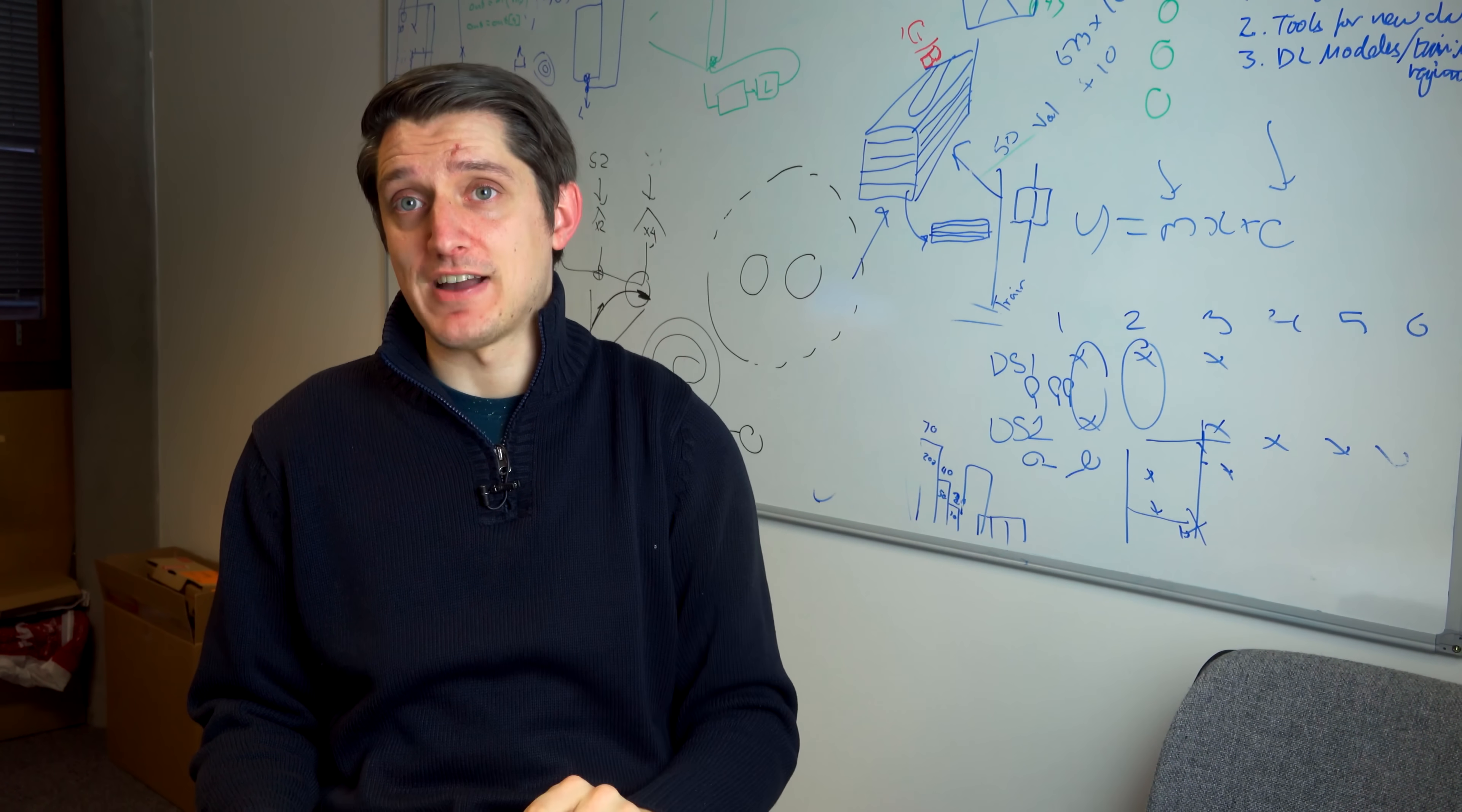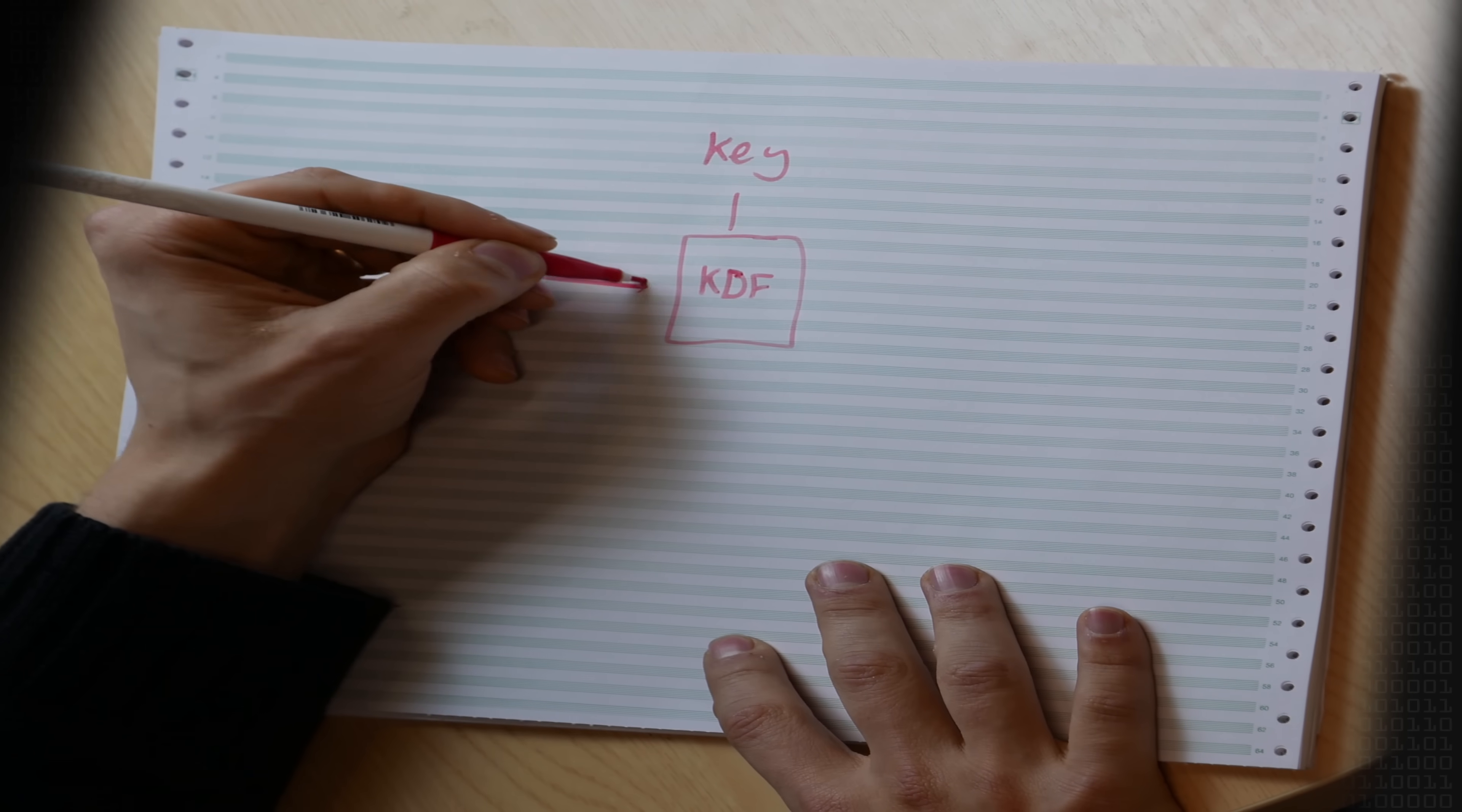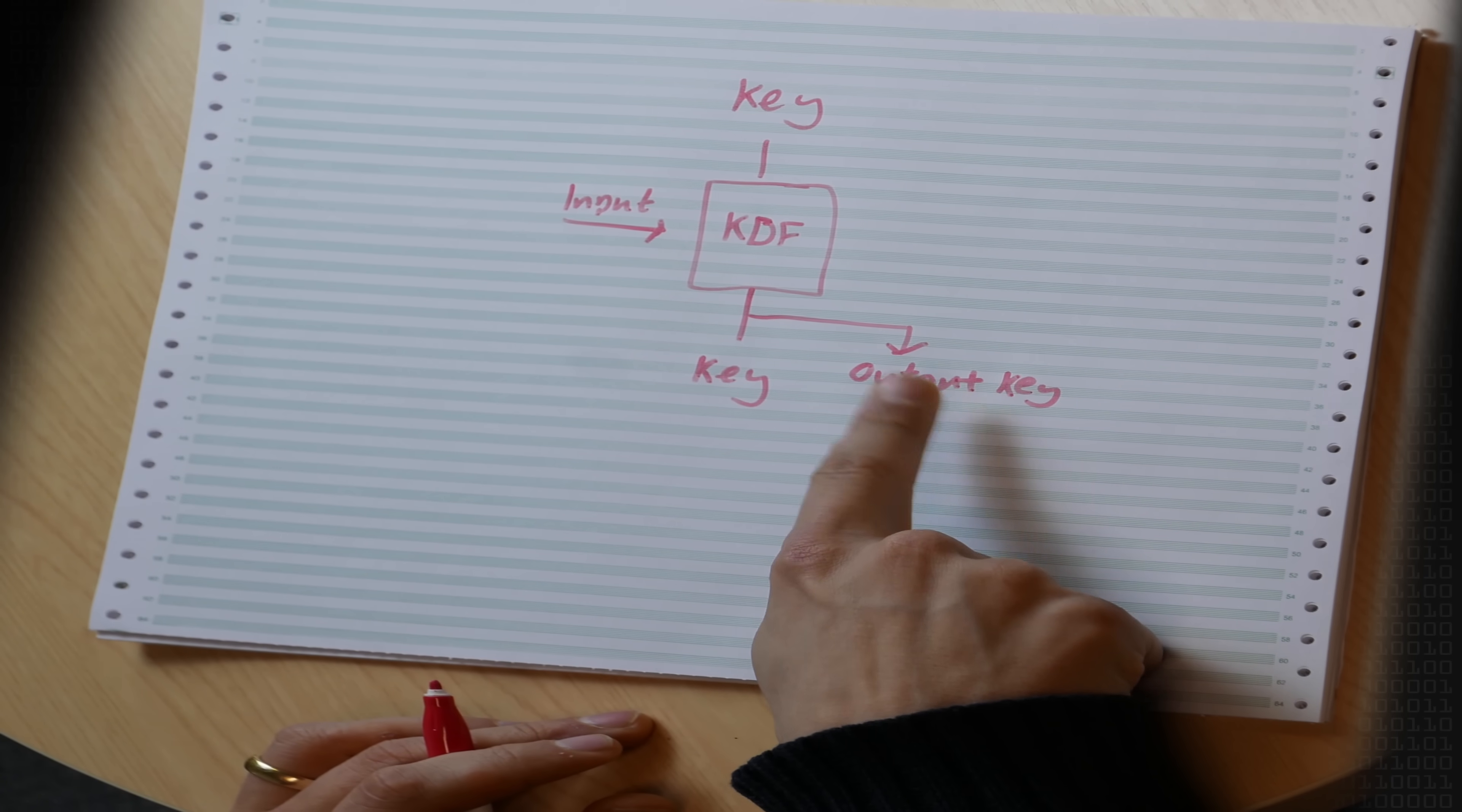The key derivation function that we use here is called a KDF ratchet. Let's imagine that we have our root key or our current key and we want to encrypt a message. So what we do is we pass it through a key derivation function which operates in a similar way to a hash. It has an input that comes in here and out comes a new key and your current output key or message key. This is a kind of chain, so this is message one that we encrypt using this key.